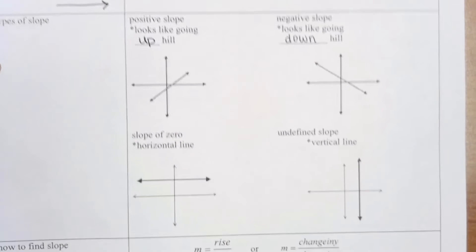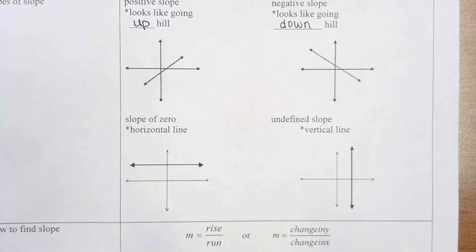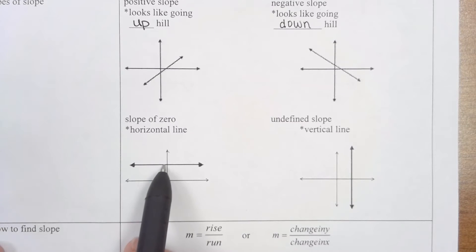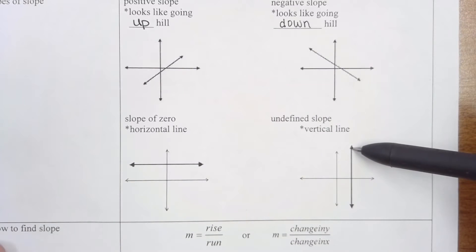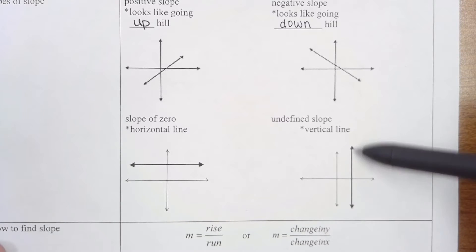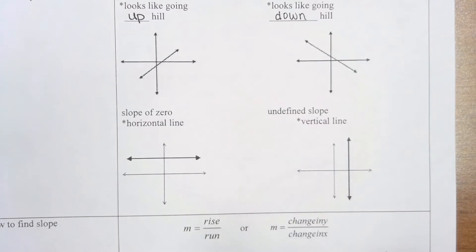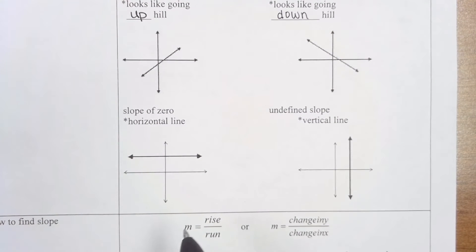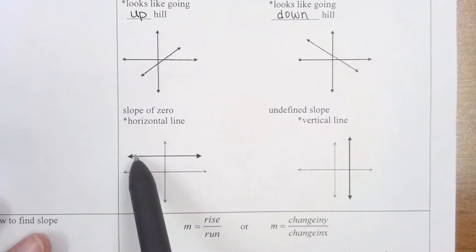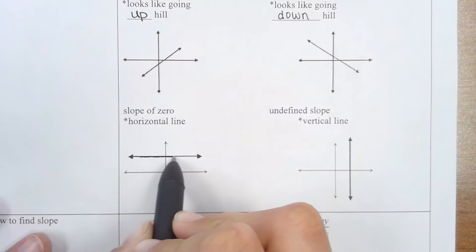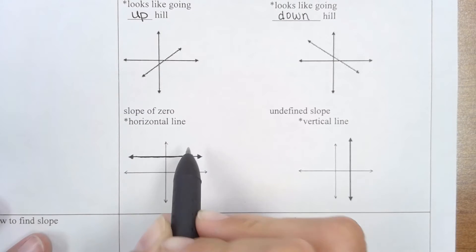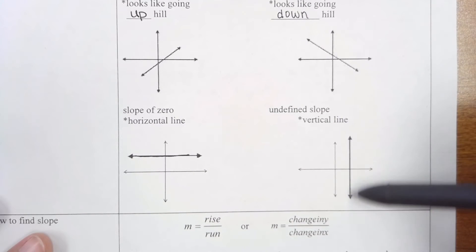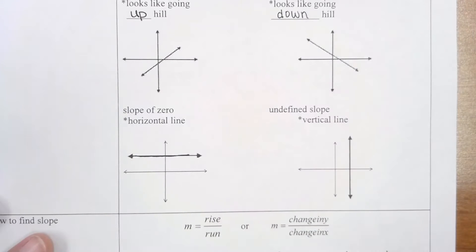There are two special cases of slope. If you have a straight horizontal line, we call this a zero slope. If you have a vertical line, we call this an undefined slope. Using the slope dude analogy: he can ski on a horizontal line because he's on a flat part — that's a zero slope. But if he were to ski on a vertical line, he's pretty much falling off the mountain, which is why it would be an undefined slope.